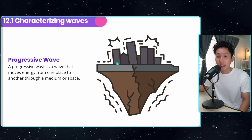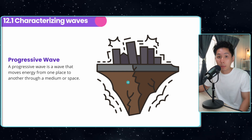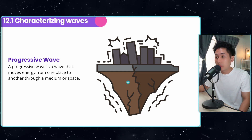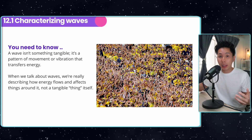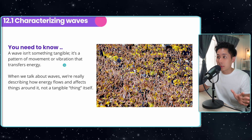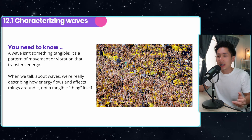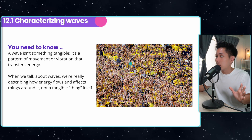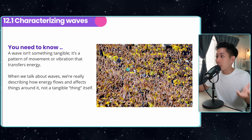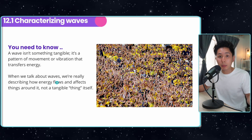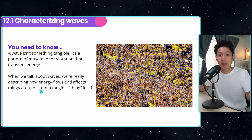The first thing we're going to look at today is the term called progressive wave. This wave moves energy from one place to another — for example, a primary or secondary seismic wave, which is transferred during an earthquake. A wave is not something tangible; it is a pattern of movement or vibration that transfers energy. I've included an image of people doing the wave pattern in a stadium. The wave is not a thing you can touch, but it is a pattern that everyone is doing together. When we talk about waves, we are really describing how energy flows and affects things around it.